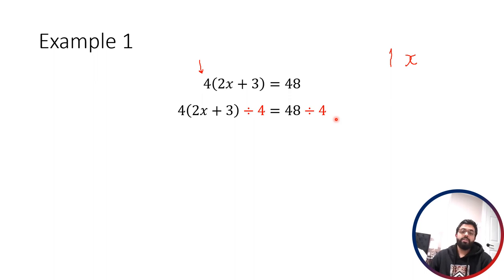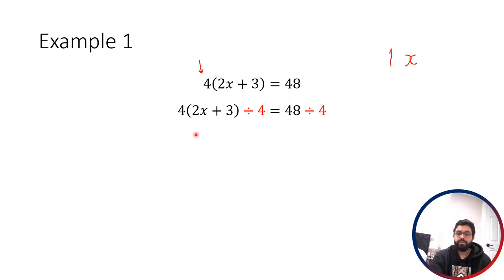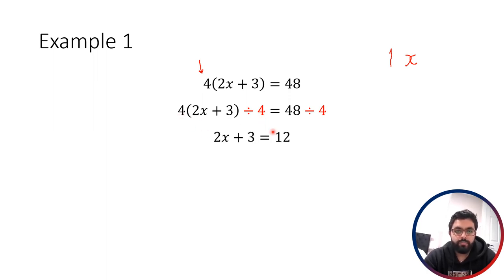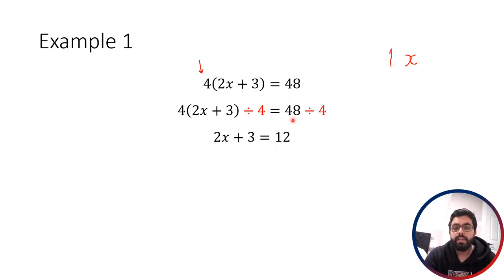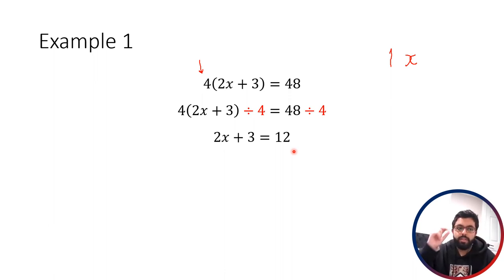If you're really good with your times tables you'll know the answer automatically, but long division is totally okay too. With time you'll get more comfortable multiplying and dividing by small numbers like 2, 3, 4, 5. On the left side the 4s disappear, leaving just 2x + 3. Because that whole expression is no longer multiplied by anything on the outside, we don't need the brackets anymore. On the right side, 48 divided by 4 is 12. So now we've got 2x + 3 = 12.